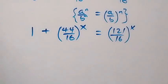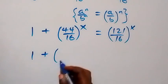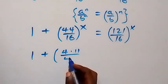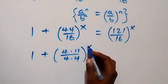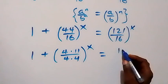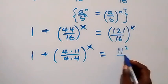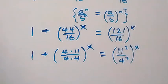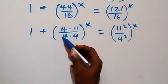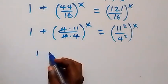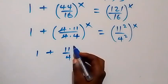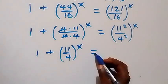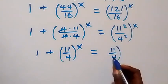We can rewrite this as 1 plus, in brackets, 4 times 11 as 44, over 4 times 4 as 16, all raised to power x, now equals 121 written as 11 squared, over 16 as 4 squared, all raised to power x. The 4s cancel each other, leaving 11 over 4. So we have 1 plus 11 over 4 all raised to power x, equals 11 over 4 all squared, raised to power x.